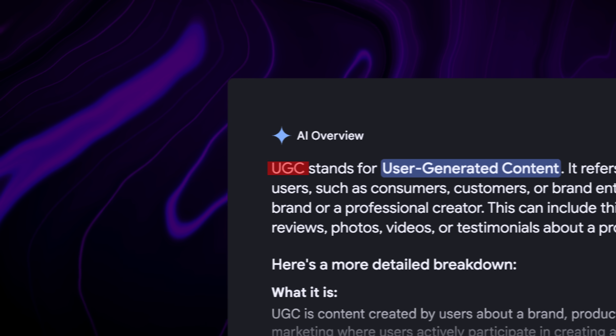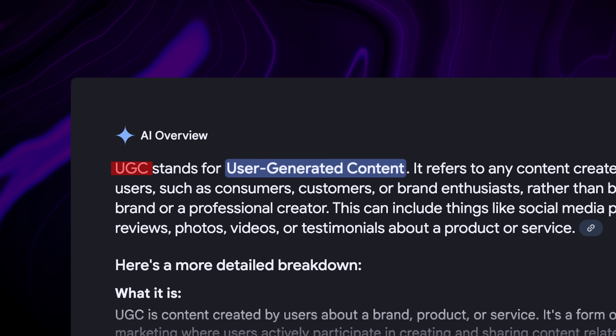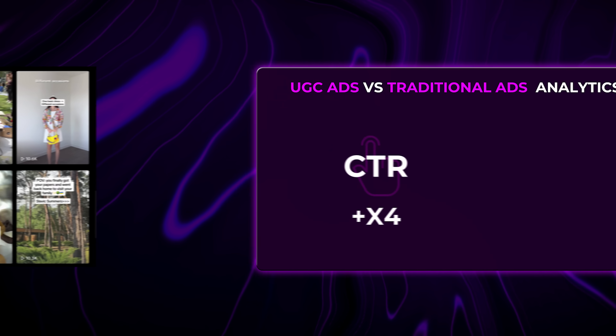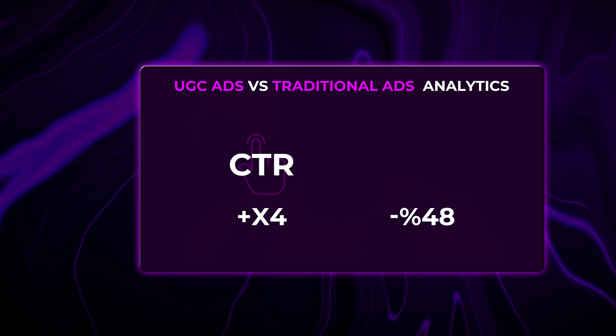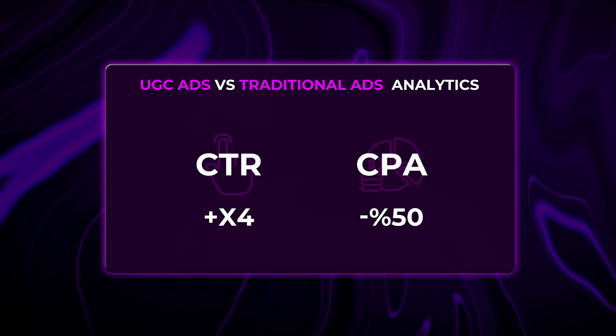UGC, or user-generated content ads, are currently blowing up on social media — getting four times higher click-through rates and 50% lower cost per acquisition than traditional ads. And you definitely need this method to create the best UGC ads around. So let me show you the method and let's get started.